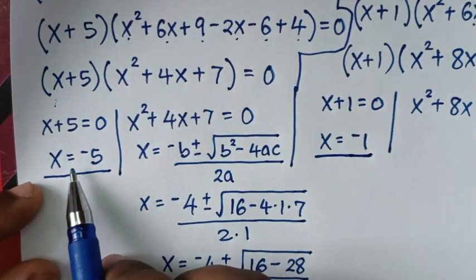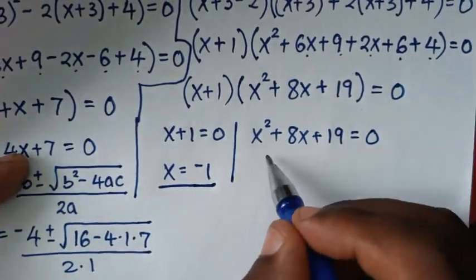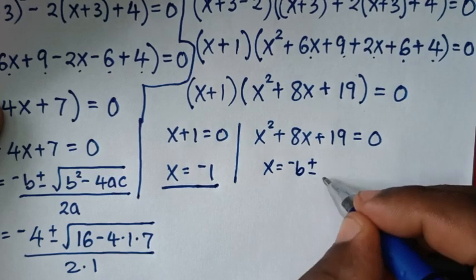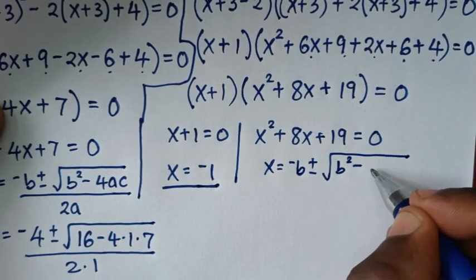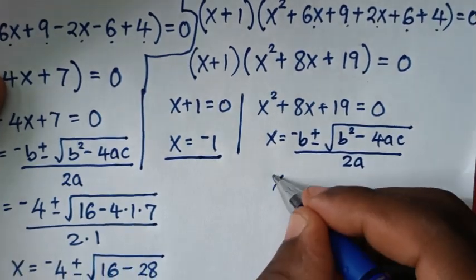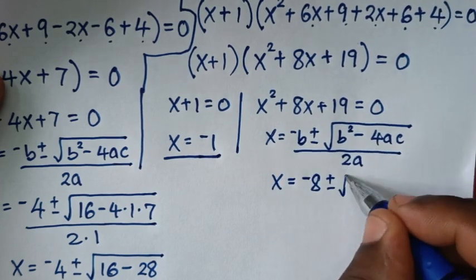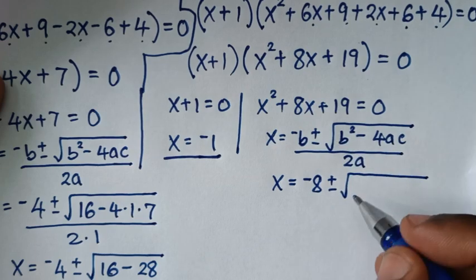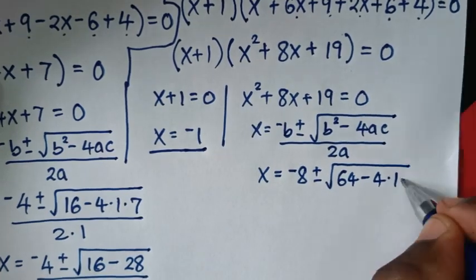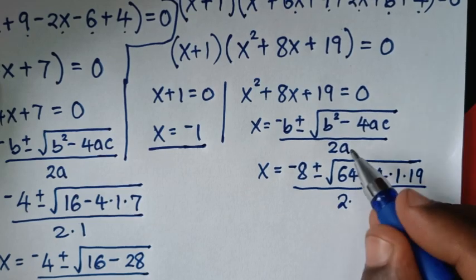From the quadratic x² + 8x + 19 = 0, we use the quadratic formula: x = −b ± √(b² − 4ac) / 2a. So x = −8 ± √(8² − 4 × 1 × 19) / (2 × 1), which is −8 ± √(64 − 76) over 2.